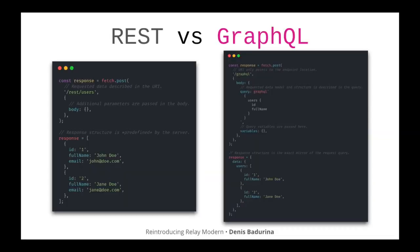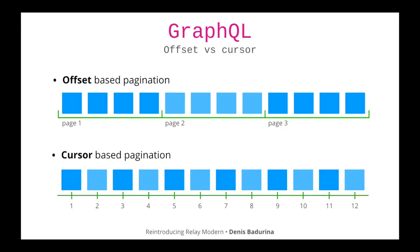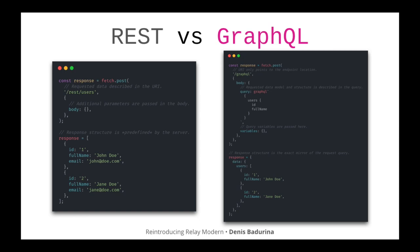Here we have side-by-side a standard REST request and a GraphQL request. On the left side you see a REST request: you define what data type you want inside the URL and pass additional parameters inside the body. The response is fixed — the structure is predefined by the server. If you ever want to get more data from the response, you either need to modify the server or make N+1 requests to fulfill your needs. On the other hand, with GraphQL, the endpoint tells you nothing except the location of the GraphQL server. Inside the query parameter, you specify exactly what you need, and as a response you get exactly what you've requested.